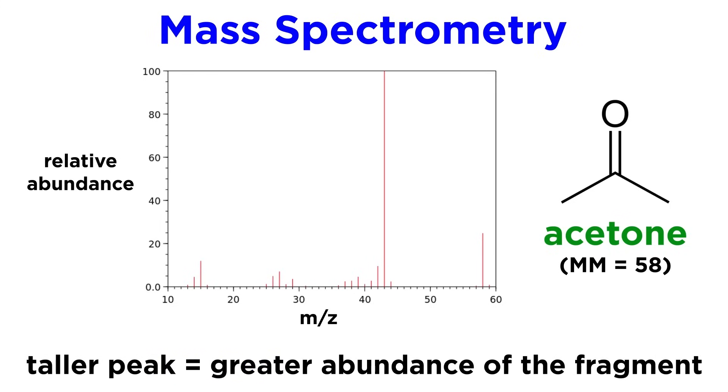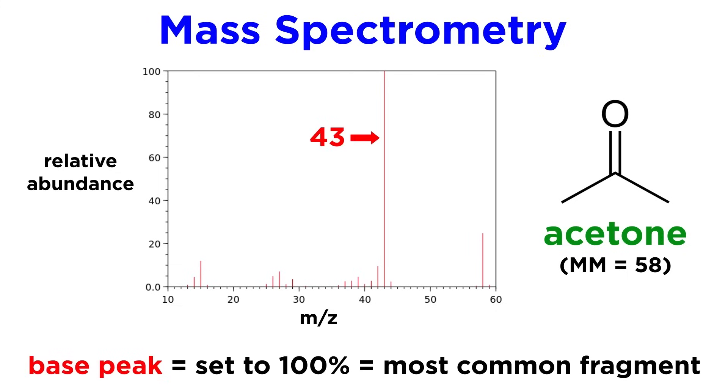The taller the peak, the greater the abundance of the fragment that is responsible for it, so let's now look at what is called the base peak. This refers to the tallest or most intense peak on the spectrum, which is set to 100%, and all other peaks will be relative to this value. In this case, the base peak occurs at 43.